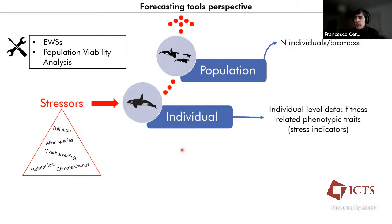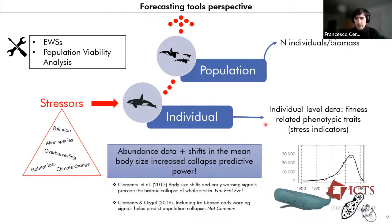And this is the first level where we actually could observe stress signals from the individuals by looking at the fitness related phenotypic traits that can comprehend behavior or morphological traits. This has already been proved to be a winning strategy when trying to forecast population collapse. In this couple of papers from Chris Clements and collaborators, where the abundance-based early warning signals were analyzed together with the shifts in morphology, for example, in the average body size, both in data coming from natural wheeling populations, and also from experimental protist communities. Considering these two together helped in increasing the predictive power of the signals.